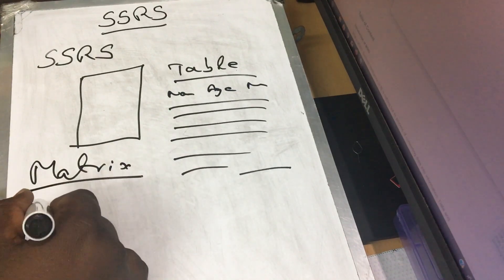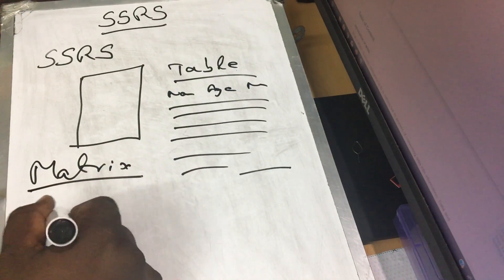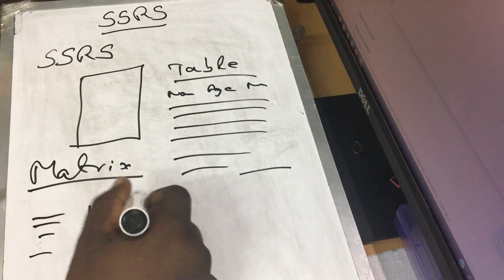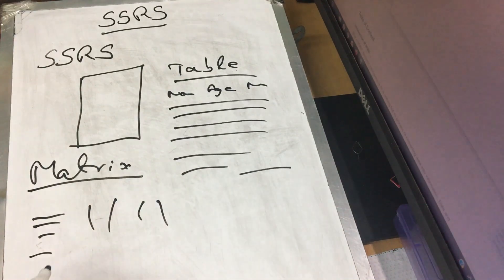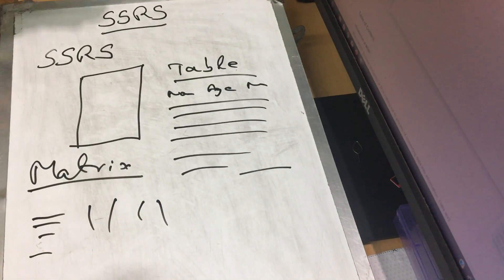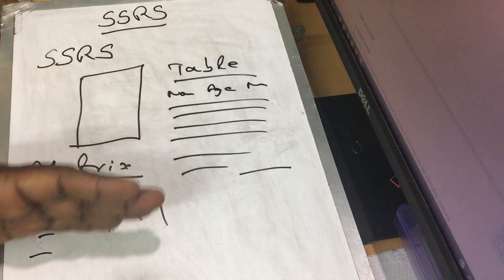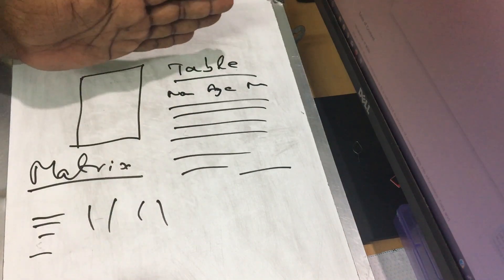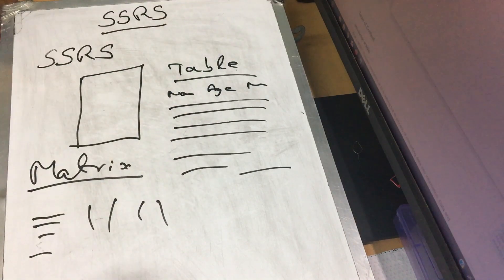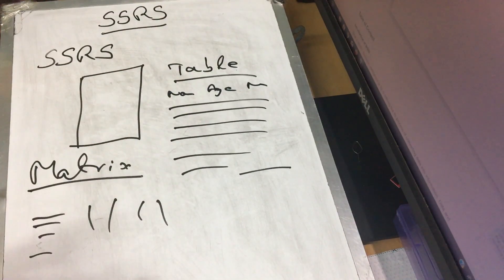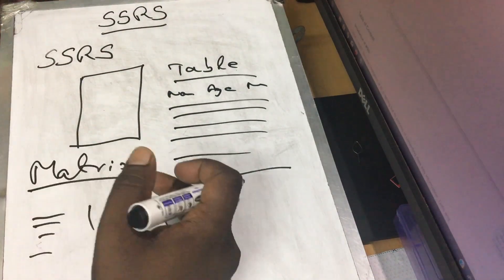If you want, you can write row by row — that is the table format. The matrix is written row by row and also column by column.